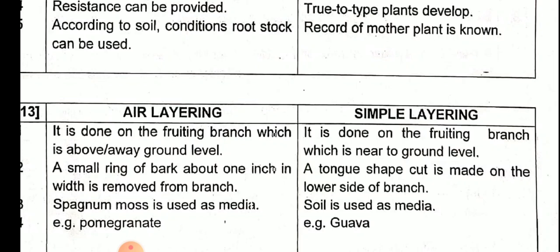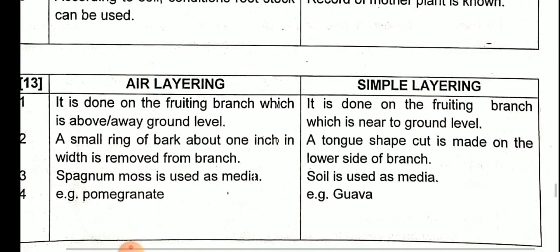Third point: in air layering, sphagnum moss is used as a rooting media. In simple layering, the branch is buried into the soil, so soil is used as the media. Last point: an example of air layering is pomegranate, while simple layering is done in guava.